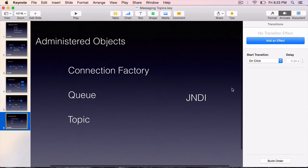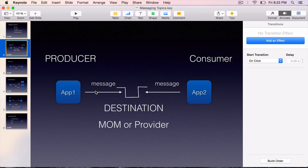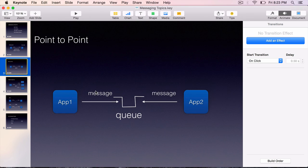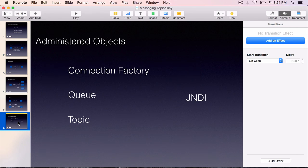To summarize, from this lecture we have learned the key terminology used in messaging — producers, consumers, queues, topics, publish-subscribe, point-to-point messaging, and synchronous and asynchronous consumption. In the asynchronous way, we have the MDB, which is a Java EE or EJB component that our application servers will invoke. More details on that in future lectures. We have also learned about administered objects — created during deployment, they are key to the messaging infrastructure, and we look them up using JNDI.